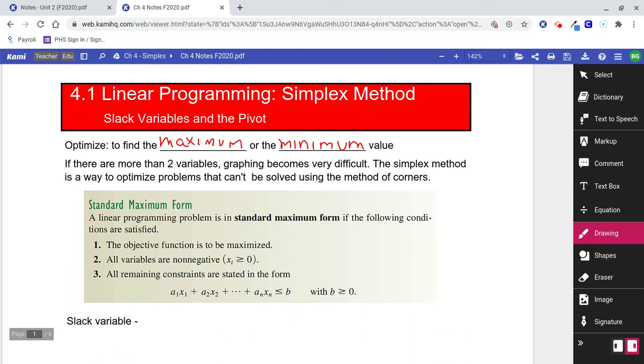The Simplex Method is a way to optimize problems that can't be solved using the method of corners. So mainly we'll be talking about standard maximum form today. So we're pretty much only maximizing problems. The objective function is to be maximized. We won't have any minimized problems today. All variables are non-negative, and all remaining constraints are stated in the form this. That just means standard form.